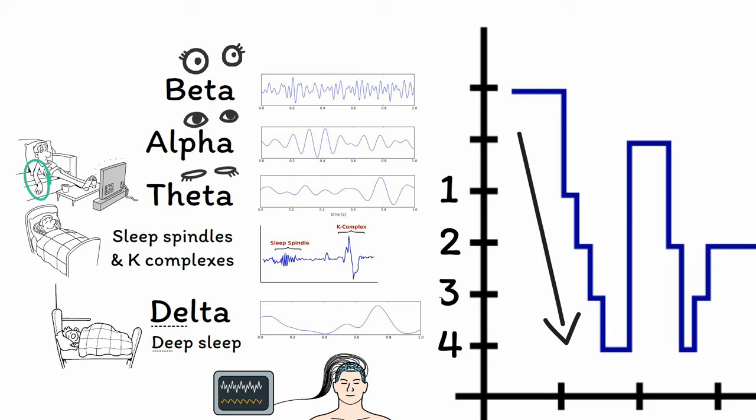Deep sleep is the most restorative phase of sleep, both physically and mentally. In this state, someone becomes unaware of all but the most intrusive external stimuli. For example, outside traffic noise or the sound of a television are typically blocked out, although louder noises, like an alarm clock going off, may break someone out of this stage of sleep.